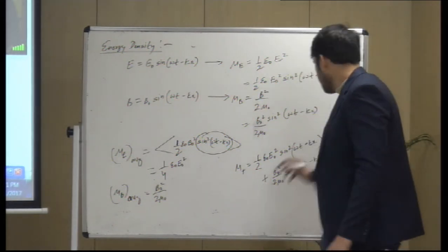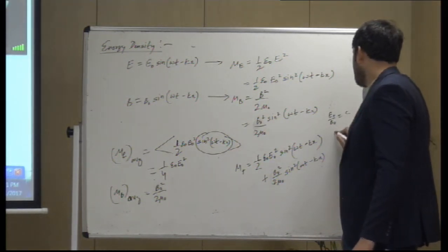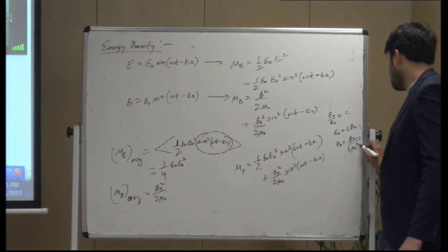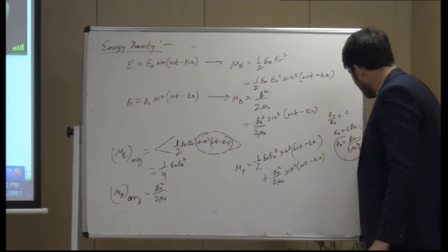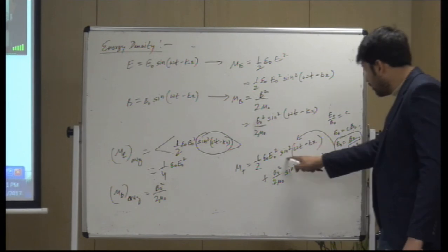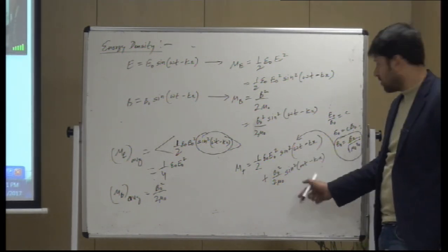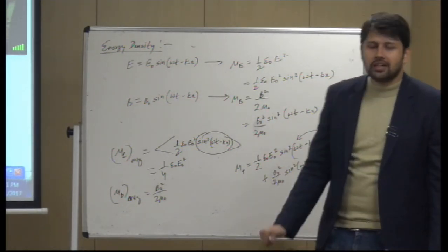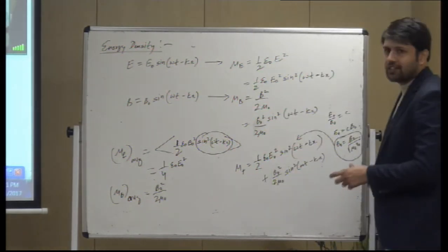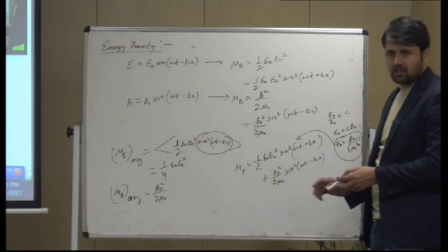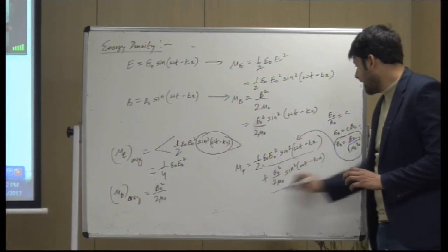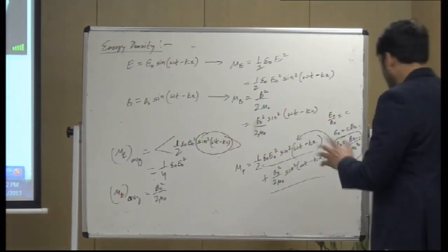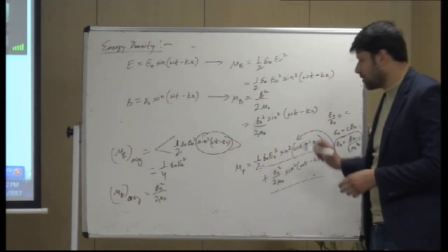The total energy density at any time is (1/2) epsilon naught E naught squared sin squared(omega t minus k x) plus B naught squared sin squared(omega t minus k x) by 2 mu naught. Since E naught by B naught equals C, and C equals 1 by sqrt(mu naught epsilon naught), substituting into the first term gives B naught squared by 2 mu naught — the same as the second term. So the magnetic and electric components of energy are always equal, and their average values are always equal.